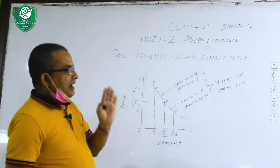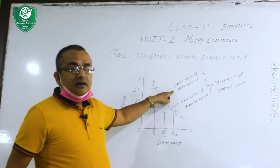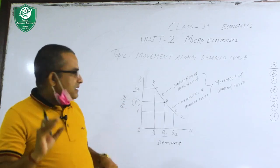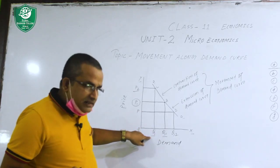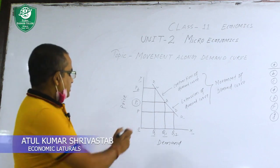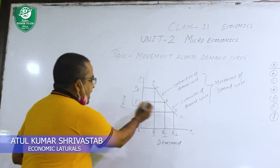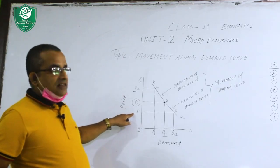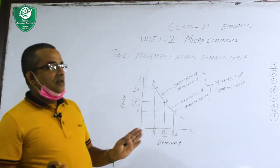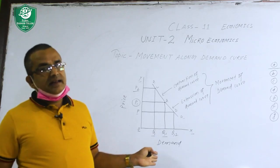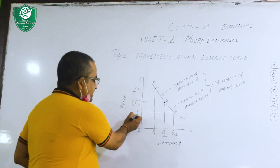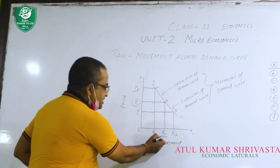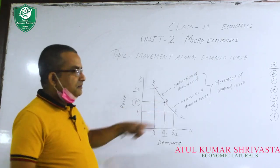This is technically called contraction of demand curve. Contraction of demand curve happens due to an increase in price and a decrease in demand. On the other hand, when price was P1 and demand was Q1 with the curve at point A, if the price decreases to P, then we know that when price decreases, demand will automatically increase. So when price moves from P1 to P, demand increases from Q1 to Q2.